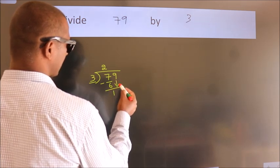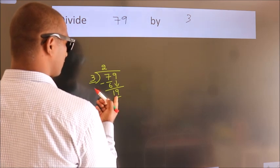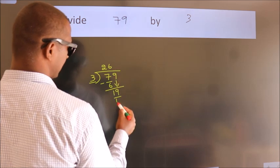After this, bring down the beside number, so 9 down, so 19. A number close to 19 in 3 table is 3 times 6 equals 18.